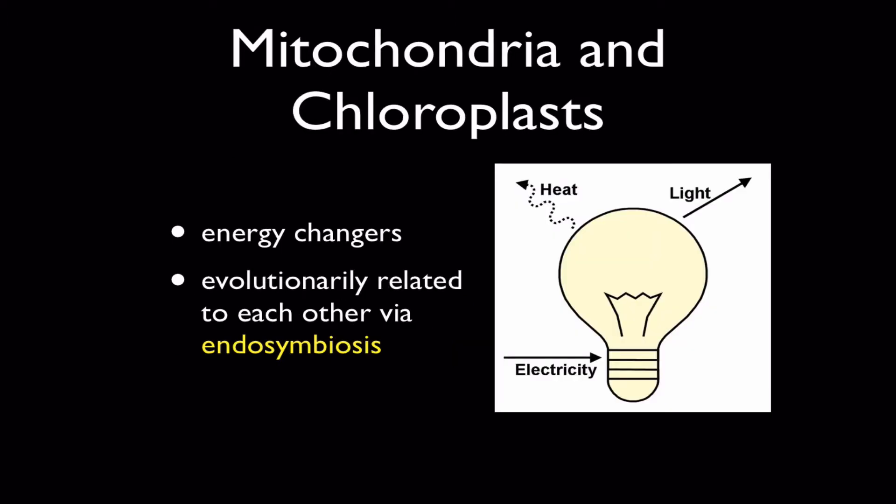Now, what do we mean by changing energy? Well, mitochondria and chloroplasts both take in energy and then release energy in a different form, so they've changed the energy. In the same way that a light bulb takes an electrical energy and then releases light, which is why we have them, they also release heat as a byproduct.